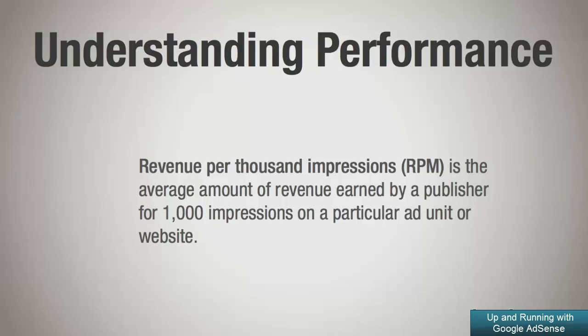Revenue per thousand impressions, also known as RPM, is the average amount of revenue earned by a publisher for 1000 impressions on a particular ad unit or website. I talked about this term earlier in the course, but I think it's really important because this to me is the best metric that I use to measure the performance of my Google AdSense advertisements.